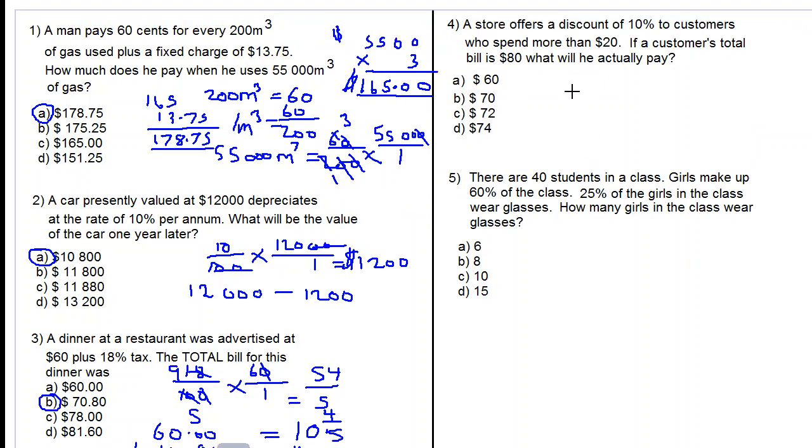Let's move on to number four. A store offers a discount of 10% to customers who spend more than $20. If a customer's total is $80, what will he actually pay? So his bill has gone beyond the $20, so he will get this 10% discount. 10 over 100 by 80 over 1. Cancel zeros. $8 off. So he will pay 80 subtract 8, which is 72. So our answer is C.